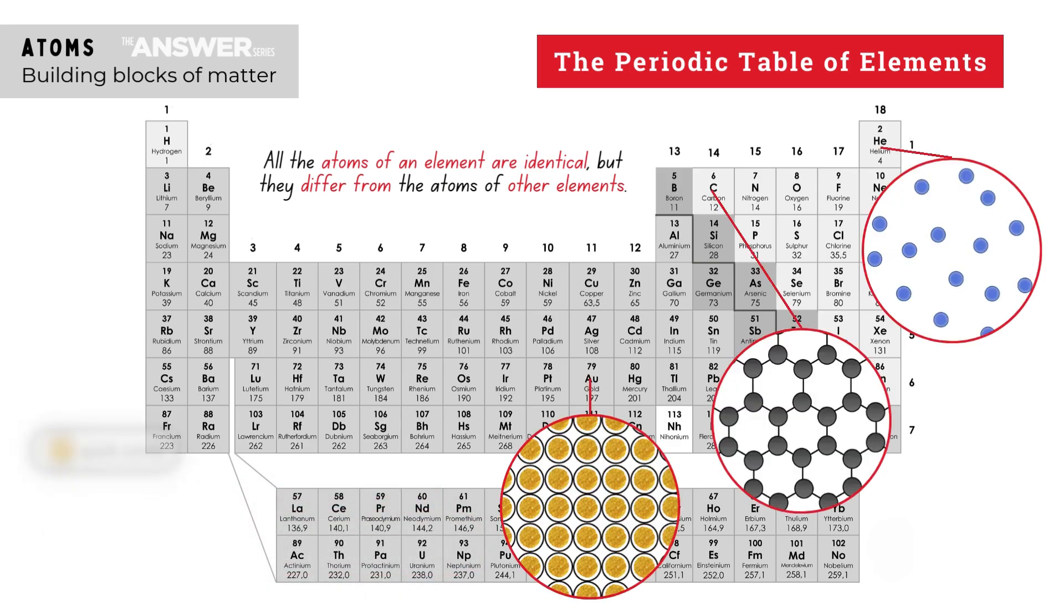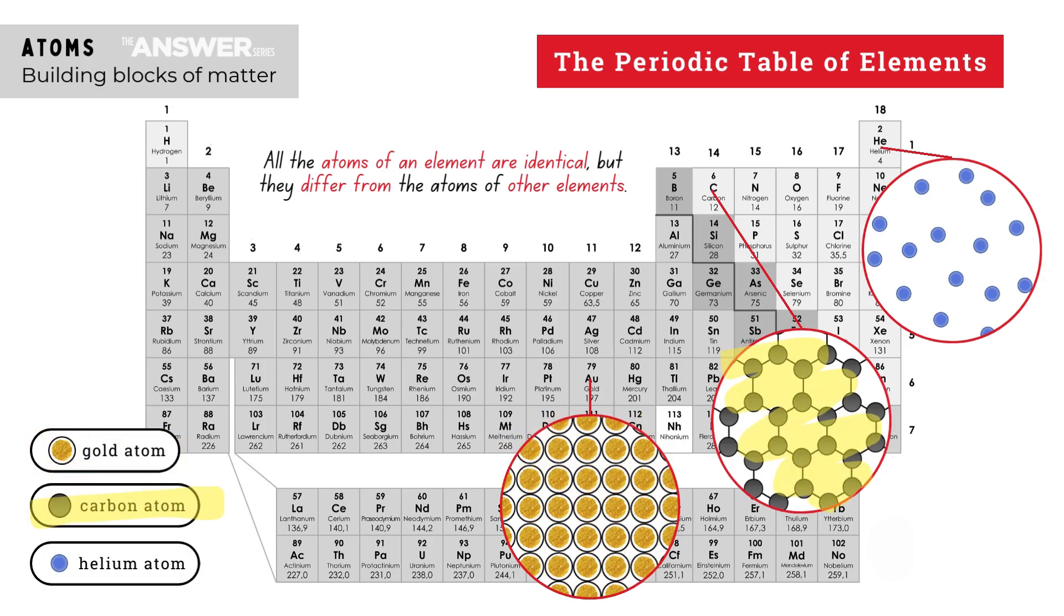Notice the difference in the atoms of these three elements: gold, carbon, and helium. The element gold consists of only gold atoms, the element carbon consists of only carbon atoms, and the element helium consists of only helium atoms.